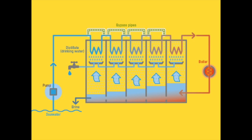The second process is called distillation, also referred to as multi-stage flash distillation. This process involves boiling salt water and pressurizing it through a series of chambers. You can see the chambers in the photo. The vapor that is produced gets collected and condensed.